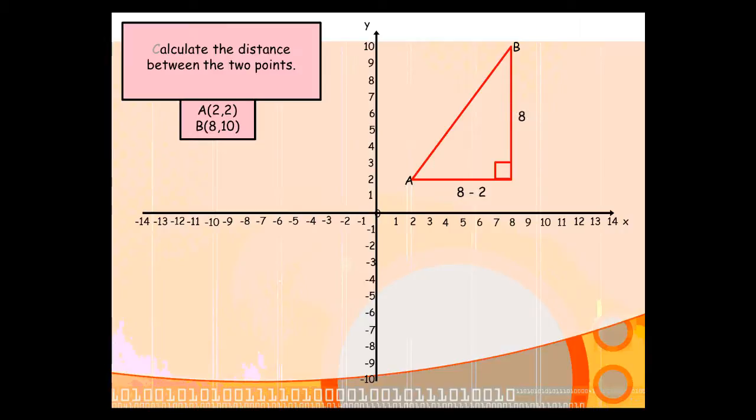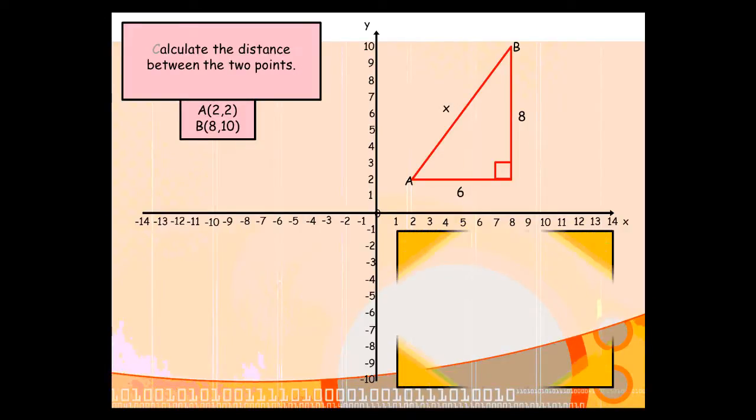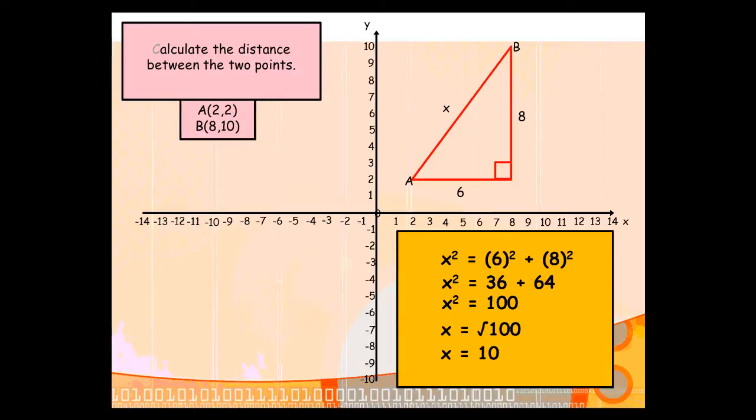So we can work out that the height of our triangle is 8, the base is 6, and once you've got these two lengths, the rest is pretty straightforward. Pythagoras' Theorem, if we call the hypotenuse x, tells us that x-squared is going to be 6-squared plus 8-squared, which tells us that x-squared is going to be 100, and x is the square root of 100, which is 10. And that's all you need to do.